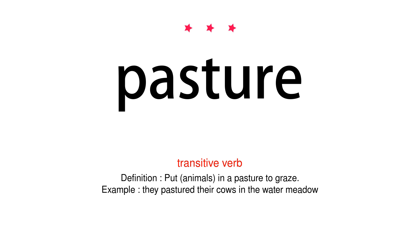Transitive verb. Definition: Put animals in a pasture to graze. Example: They pastured their cows in the water meadow.